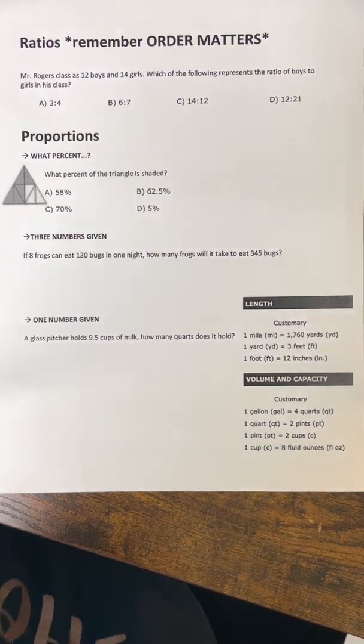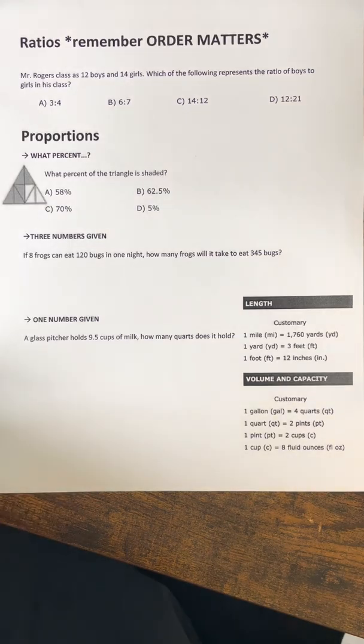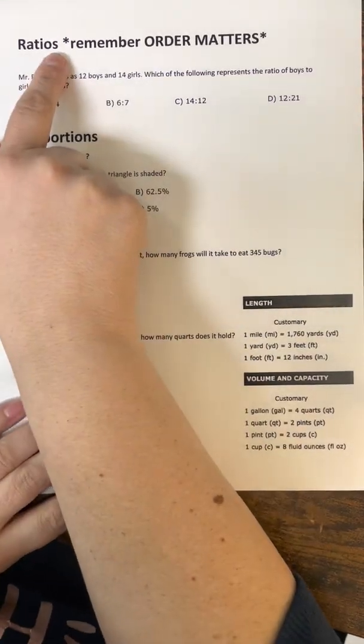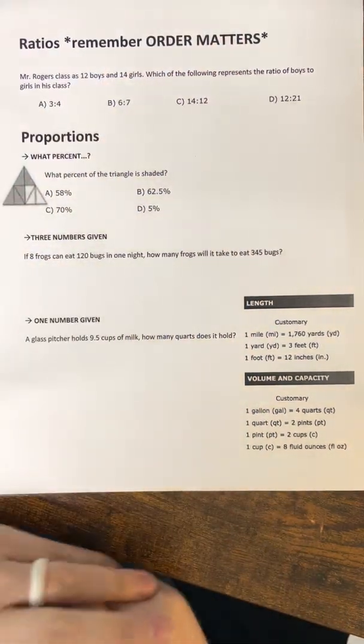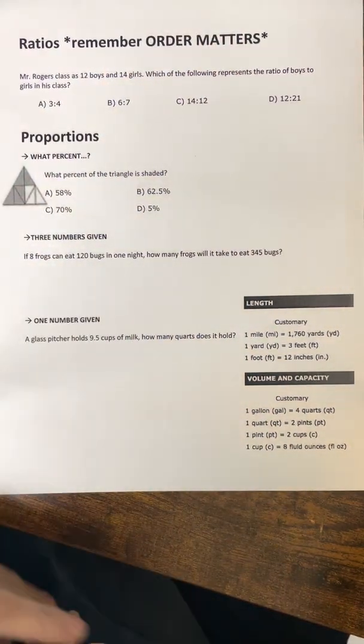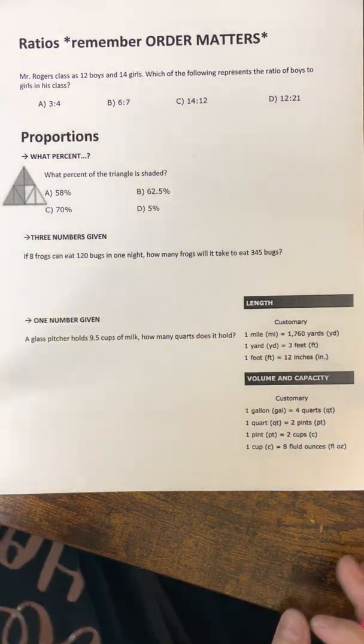All right guys, let's go back over ratios and proportions, just some reminders. We're going to start with ratio. Ratio is kind of your keyword here. Remember, when it comes to ratios, order matters. So if it says boys to girls, you need to put boys first. If it says chocolate to peanut butter, you need to put chocolate first. Order matters.